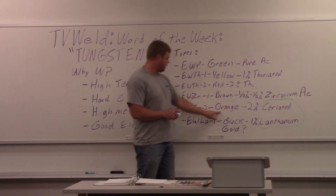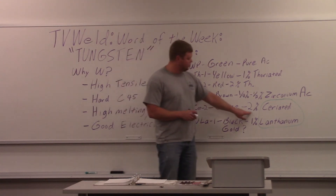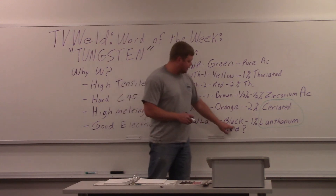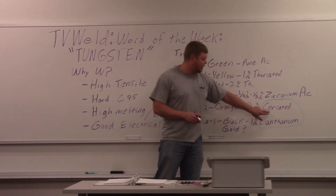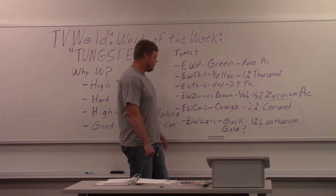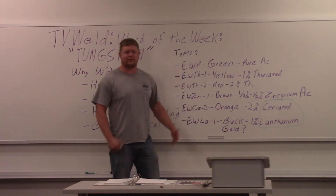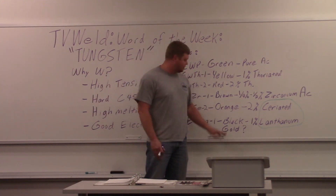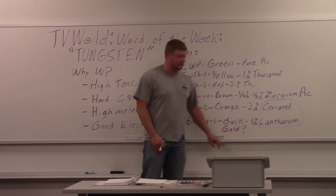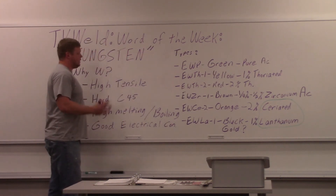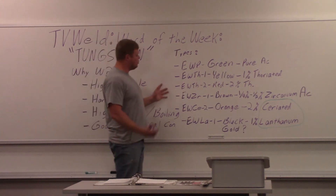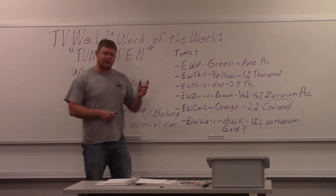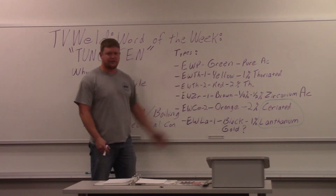Because thorium is radioactive, alternatives were developed. The most commonly used substitute is EWCe-2 — orange — which is two percent ceriated. You can also use EWLa-1 — black — which is one percent lanthanated. I circled these two because they're not radioactive and are substitutes for thoriated tungsten. I also noted gold with a question mark because some sources online say lanthanated is gold — I've always been told black, but apparently gold may also indicate lanthanated. New rare earth tungstens are coming out that claim to work for both AC and DC.